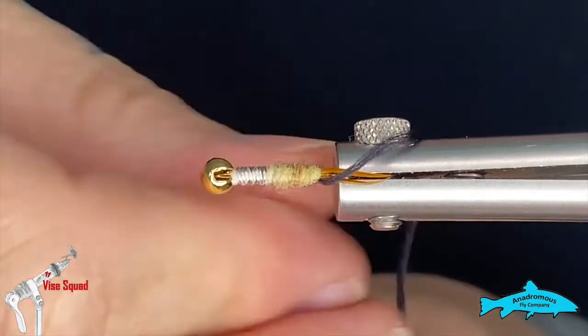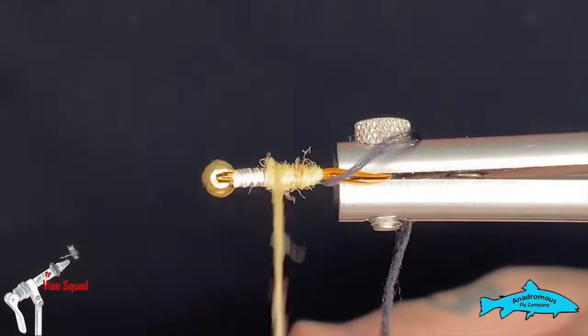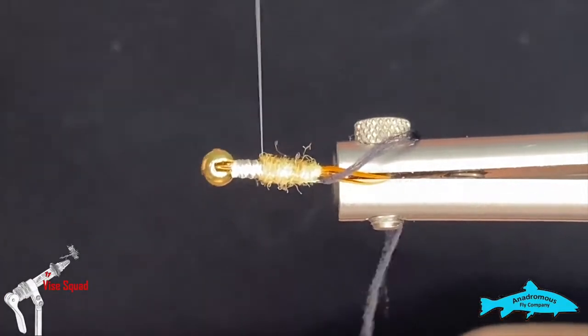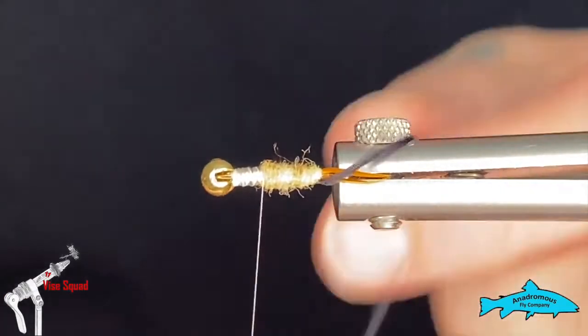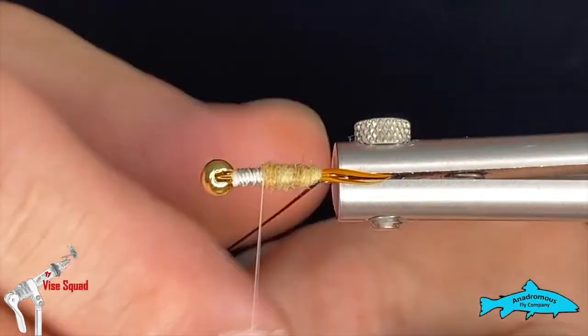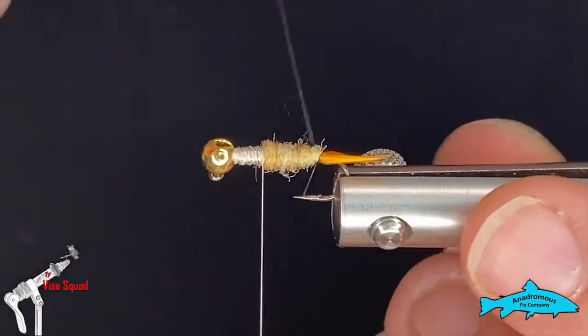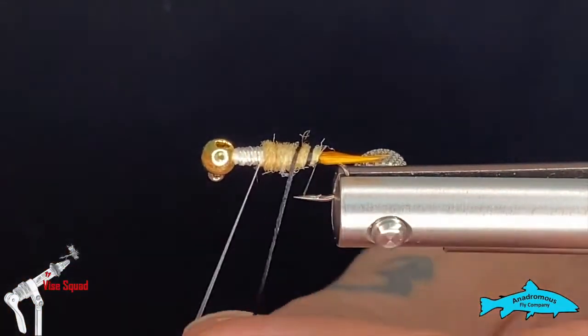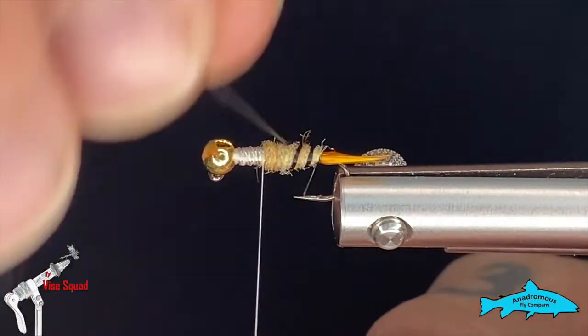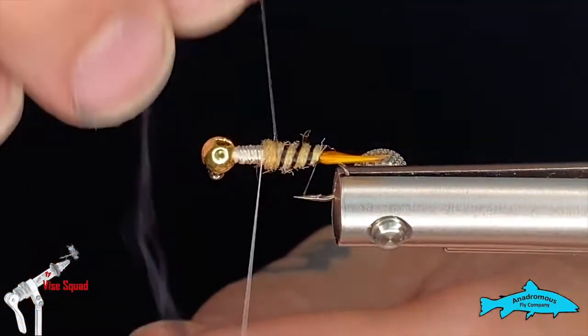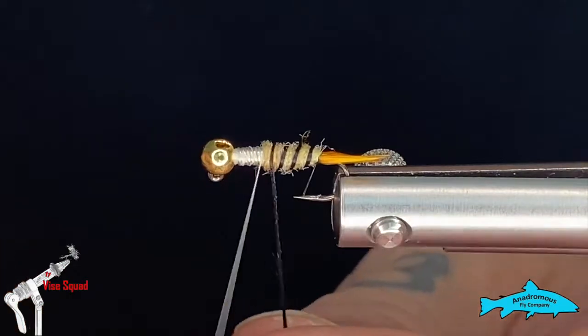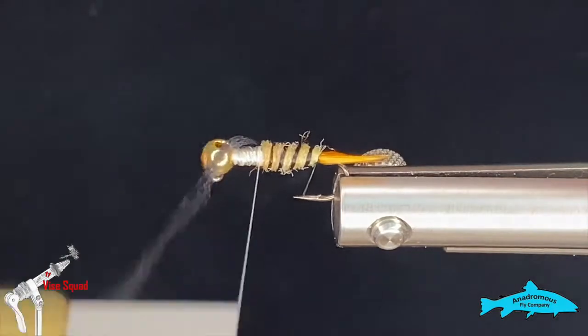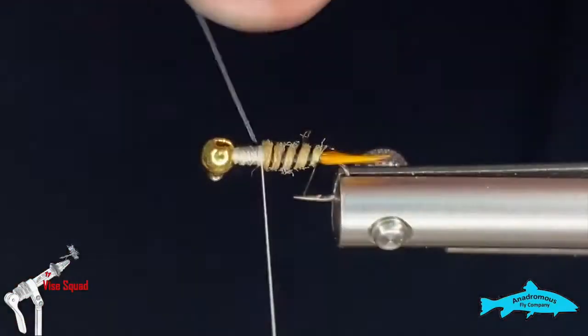I'll add just a little bit more just to get up to where the second layer of lead was. I'll grab that uni stretch and we'll just make some nice even rib wraps moving forward, as even as you can get them. We'll tie that in and snip it out.